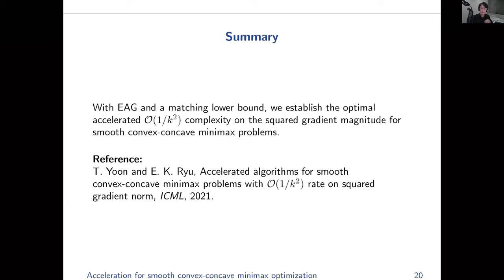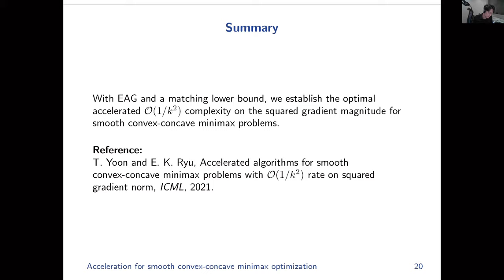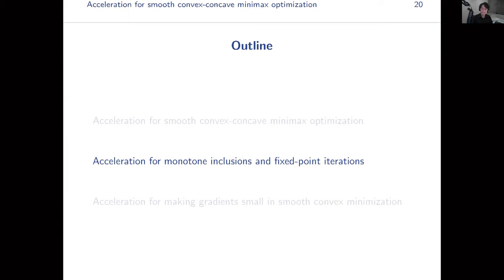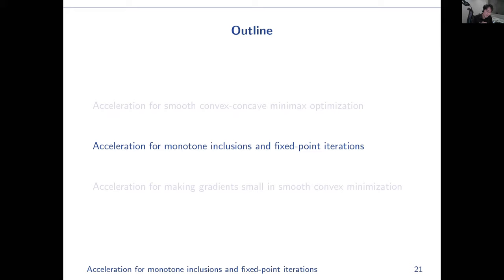To summarize Part 1: by providing the EAG method and a matching complexity lower bound, we established the optimal 1/k² rate on this problem class. This work was published at ICML 2021. Moving on: today I discuss three related but distinct acceleration mechanisms, all of which are not Nesterov-type acceleration. The second acceleration mechanism is for monotone inclusions and fixed point iterations.